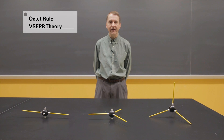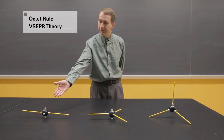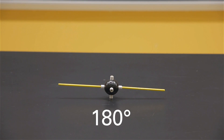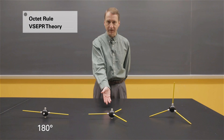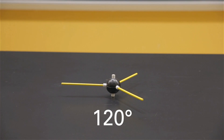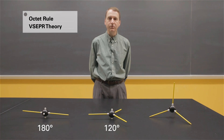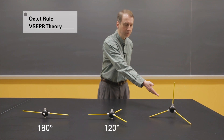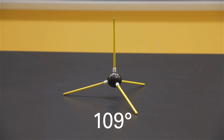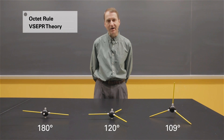There are three possibilities for the angles at which the groups will be apart from one another. On the left, when there are two electron groups modeled by the two yellow sticks, the angle would be 180 degrees. When there are three electron groups, the angle would be 120 degrees. And on the right, with four electron groups, the angle between the groups would be 109 degrees.